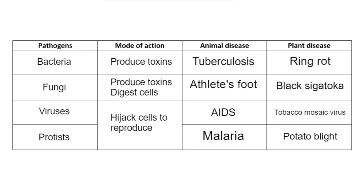For plant protist diseases, the classic example is potato blight, or late blight. As the name implies, it targets potato plants and also tomato plants. Similarly to how ring rot bacteria works, it is able to damage the leaves, tubers, and fruits, causing a lack of glucose or food storage such as starch. That is a summary of the four different pathogens, how they make us ill, and some examples of the diseases.